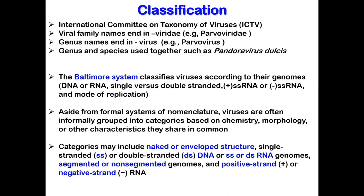The most commonly used system of virus classification was developed by Nobel Prize winner David Baltimore in the early 1970s. He classified viruses according to their genome — whether they had DNA or RNA, single or double stranded — and also how the mRNA is produced during the replicative cycle of the virus. For single-stranded RNA viruses, the genome is further differentiated by sense: whether it is identical to or complementary to the mRNA produced by the virus. SS RNA viruses with a genome identical to the mRNA they produce are said to have positive strand RNA genomes.